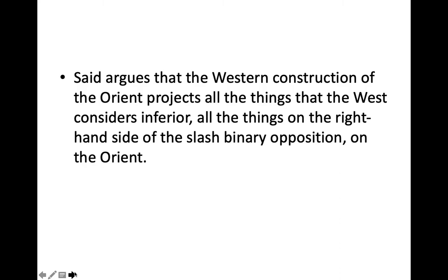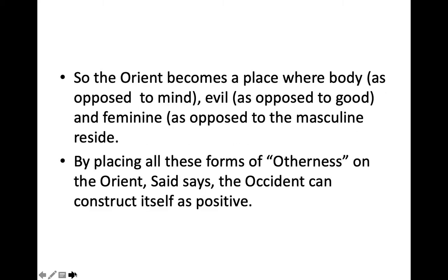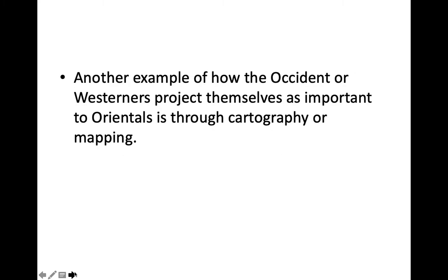Said argues that the Western construction of the Orient projects all the things that the West considers inferior on the Orient. The Orient becomes a place where body as opposed to mind, evil as opposed to good, and feminine as opposed to masculine reside. By placing all these forms of otherness on the Orient, Said says the Occident can construct itself as positive. Another example of how the West projects itself as superior is through cartography or mapping.